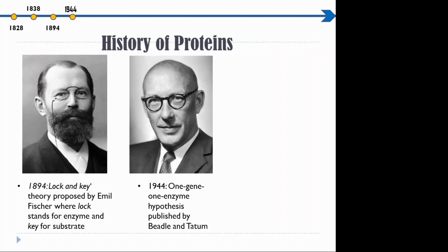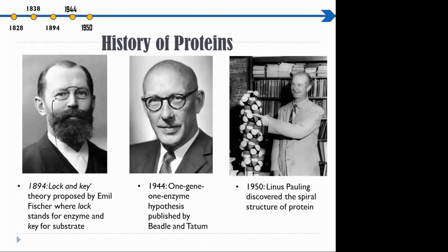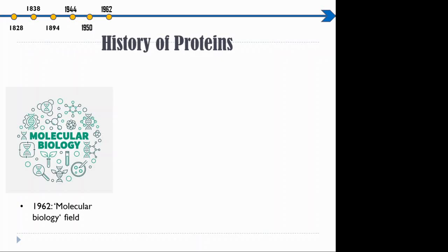Six years later, the first spiral structure of protein was determined by Linus Pauling. This structure helped give a new understanding of how a protein peptide actually is. In 1962, it was the birth of a field called molecular biology. Discoveries prior to this regarding proteins helped establish this field. Molecular biology focused on the study of biology at the molecular level.